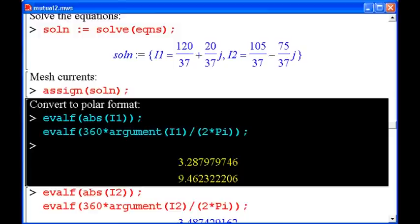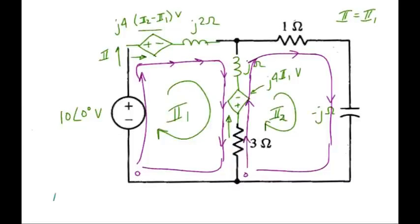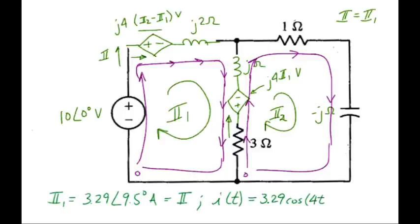So let's come back to the original circuit drawing. So based on our Maple solution, we write in phasor form that I1 is 3.29 at 9.5 degrees amps. Again, that's the current we're looking for, I. So converting that into its time domain representation, we've got 3.29 cosine, operating frequency was 4 radians per second, add the phase angle in degrees.